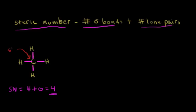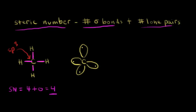So this carbon is sp3 hybridized. We drew in those four sp3 hybrid orbitals for that carbon, and we had one valence electron in each of those four sp3 hybrid orbitals. Then hydrogen had one valence electron in an unhybridized s orbital, so we drew in our hydrogens with the one valence electron. This head-on overlap is, of course, a sigma bond.